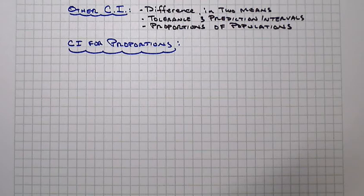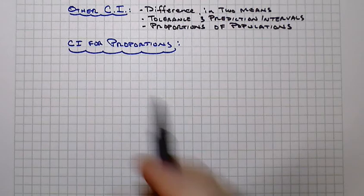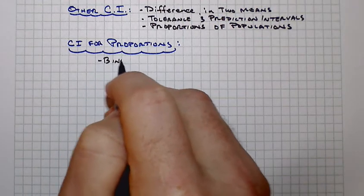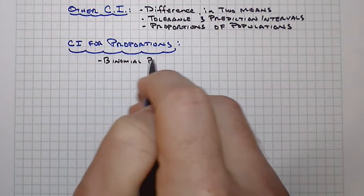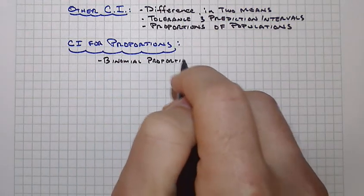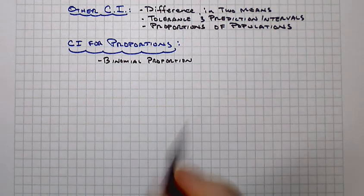One of the keys here in setting this up is that we're thinking about a binomial proportion and some sort of fraction of a population.